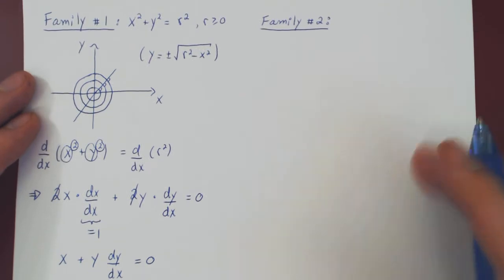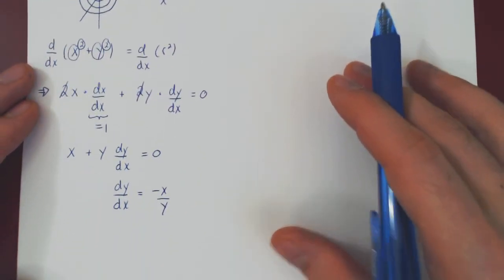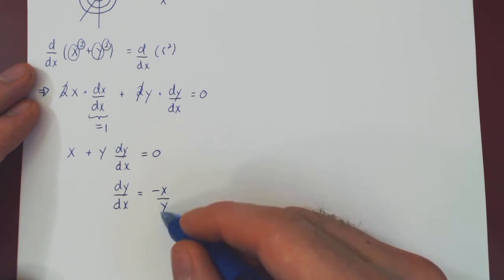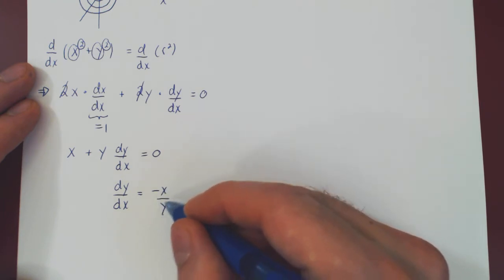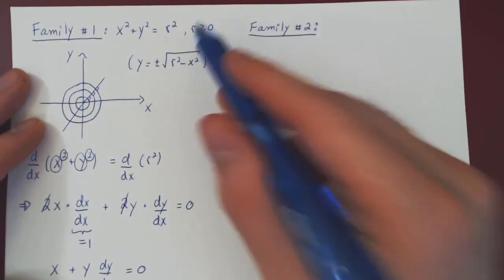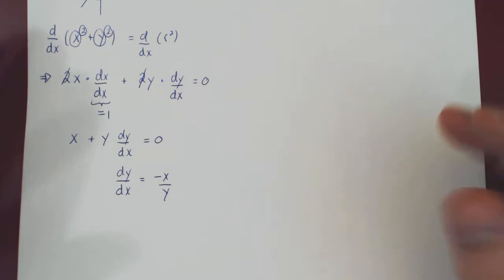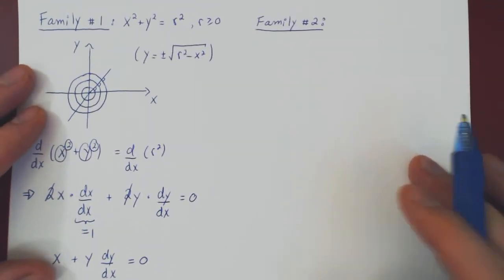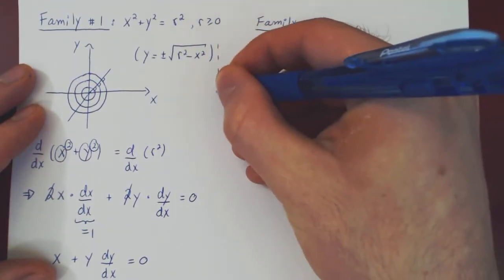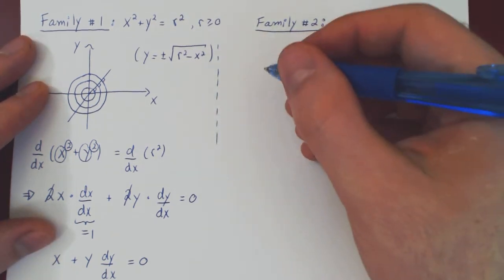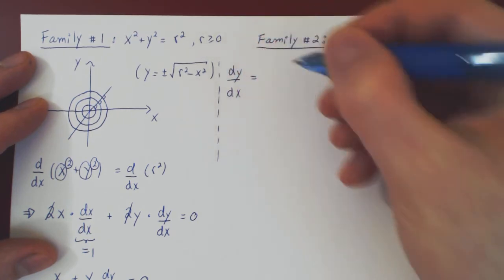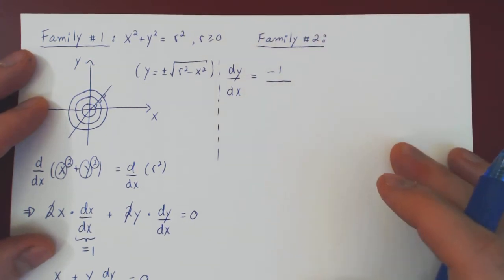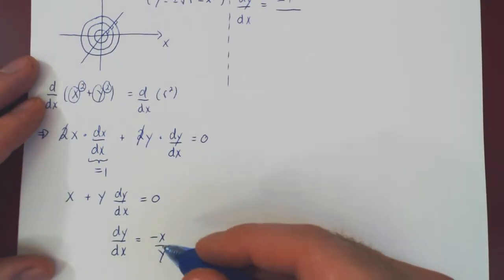And so now for any given curve in the first family, if you take a point on it given by the x and y coordinates, the derivative at this point, the slope of the tangent line, is negative of the x coordinate over the y coordinate. So we have the derivative independently of the parameter r for the first family of curves. Well, what is therefore the derivative for the second family of curves, the orthogonal family of curves? Well, if you recall, it is simply negative 1 over the derivative of the first family, which is negative x over y.